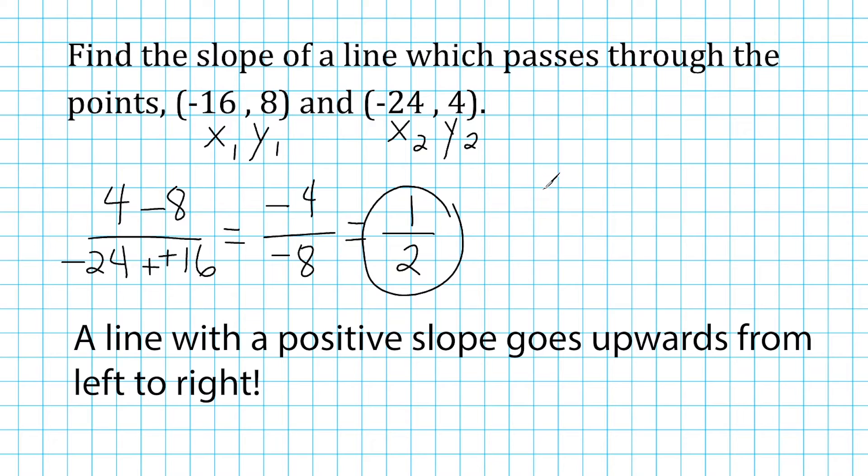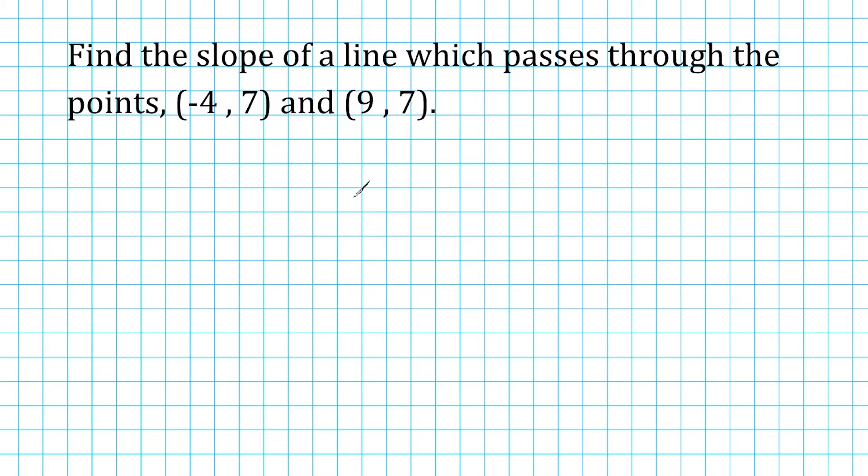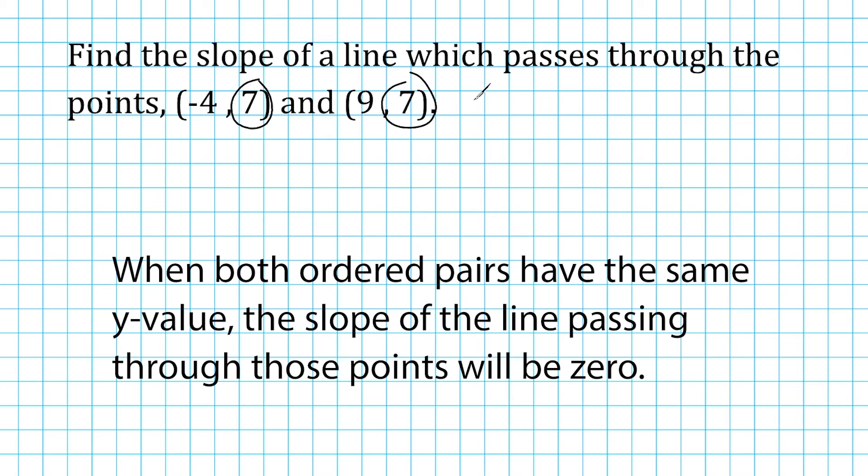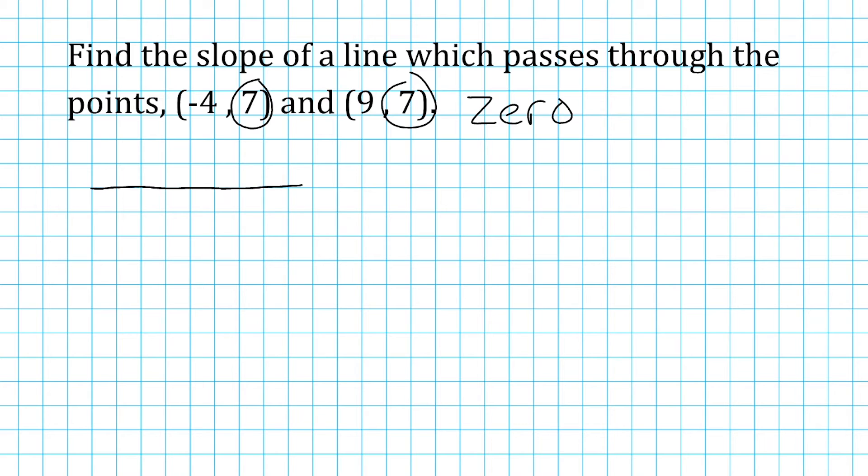All right, let's go ahead and do another example. Notice in this problem that both of our y values are identical. And whenever your y values are identical, the slope of a line that passes through a pair of points like this is going to be 0. Now, the reason for this is because the line formed by those two points is going to be a horizontal line. And a horizontal line is flat. It doesn't rise to the right, which would be positive, or go down to the right, which is negative. It has no slope whatsoever. So we would say that the slope of this line is going to be 0.